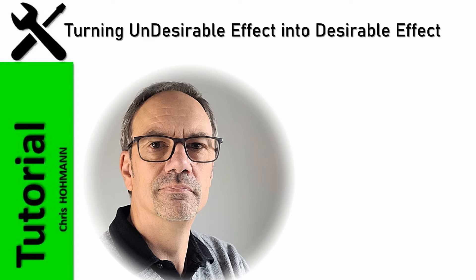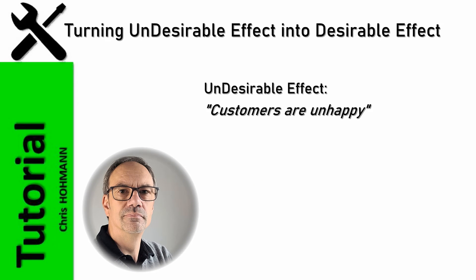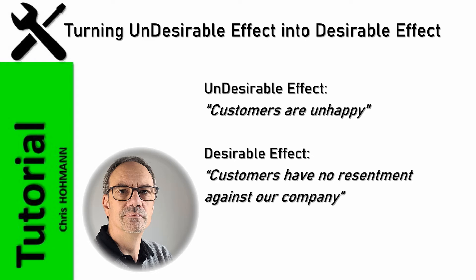When working to convert a current reality tree to a future reality tree, the first step is to state the desirable effects, which are usually the opposite of the undesirable effects. Here, we have a wording problem with customers are unhappy, which is too vague, not specific enough to fully understand what that means. My proposal for a desirable effect is not to make customers happy, but to avoid customers' resentment against the company because they felt poorly treated or couldn't find advice, a solution to mask shortages, or at least some empathy.